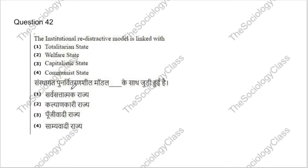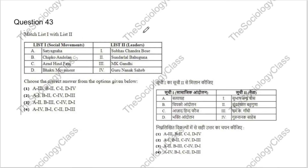Question 42: The institutional redistributive model is linked with — totalitarian state, welfare state, capitalistic state, or communist state? The correct answer is B — welfare state. Question 43 involves matching social movements with their leaders. The correct answer is A: Satyagraha — Mahatma Gandhi; Chipko Andolan — Sunderlal Bahuguna; Azad Hind Fauj — Subhas Chandra Bose; and Bhakti Movement — Guru Nanak Sahib.